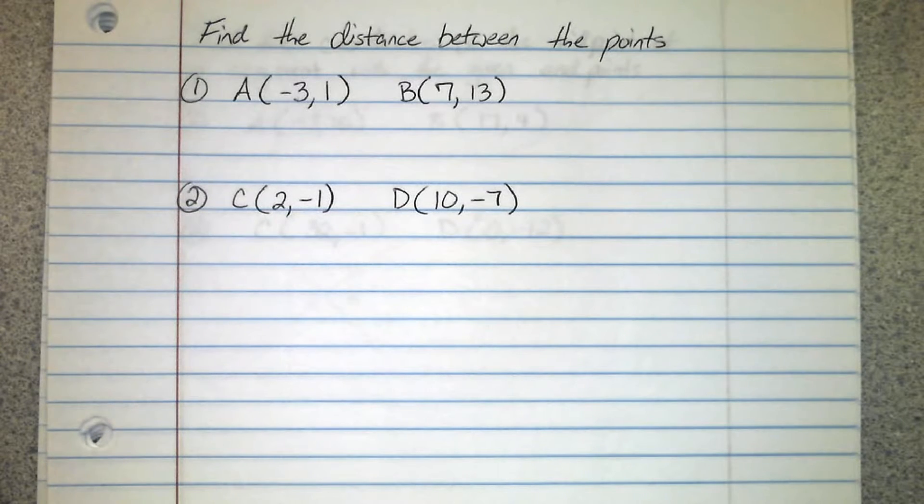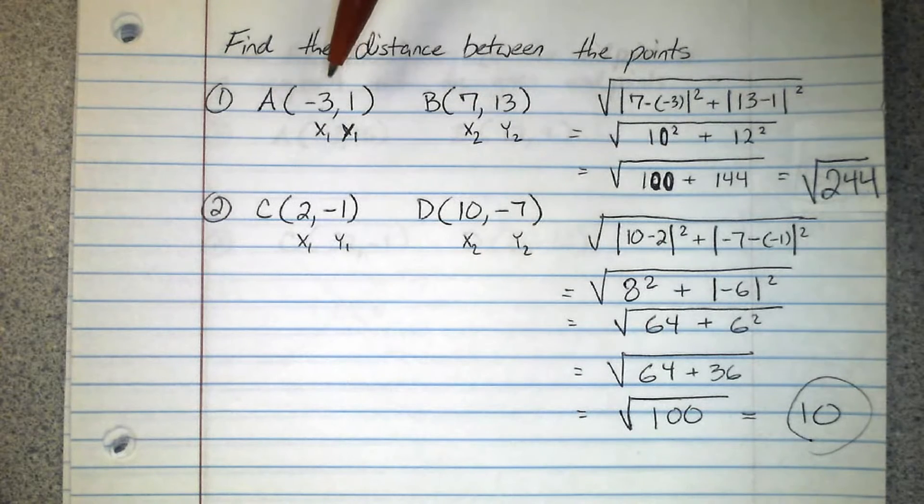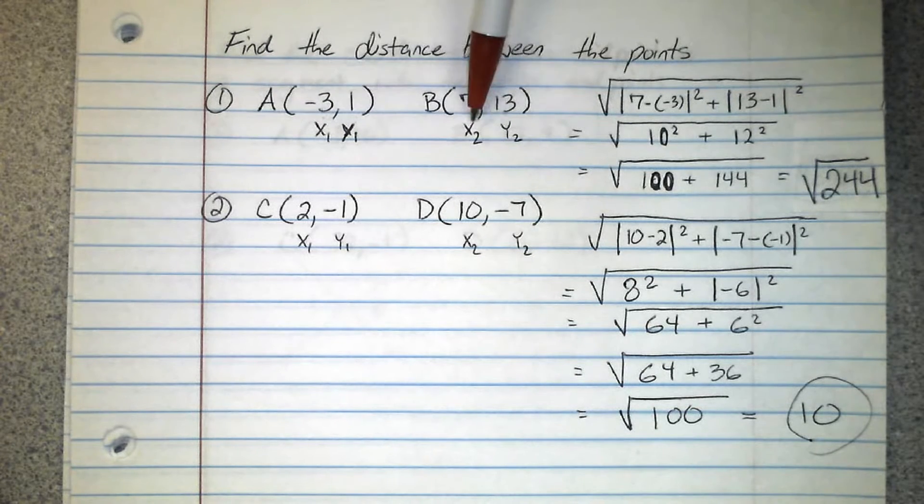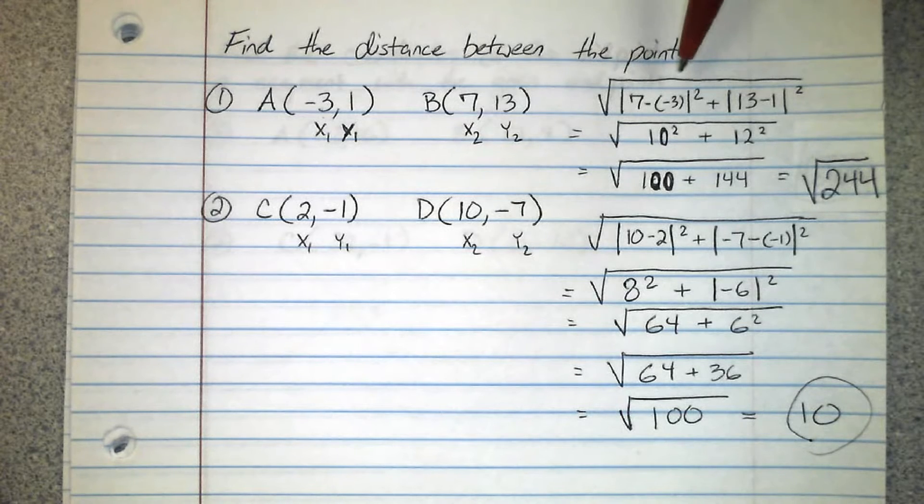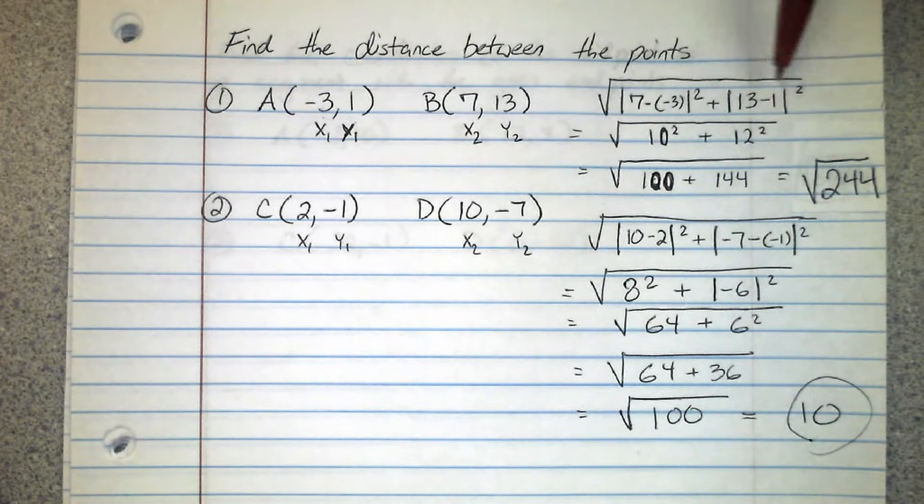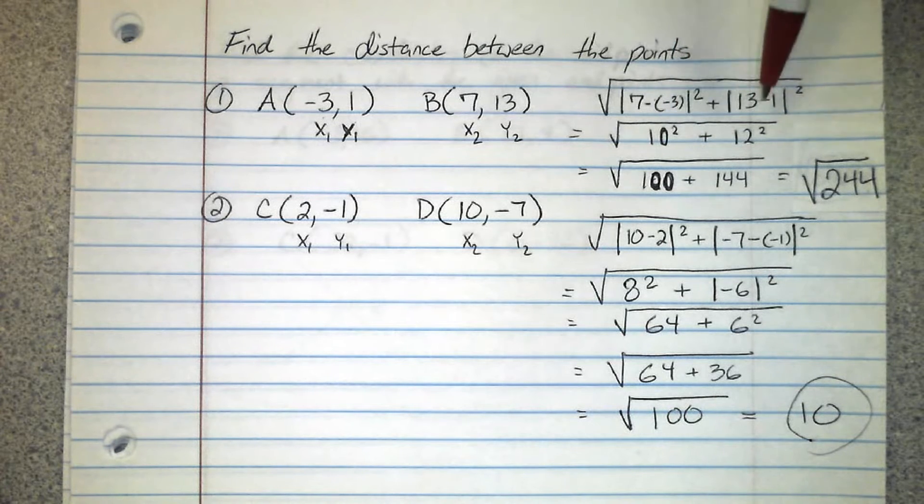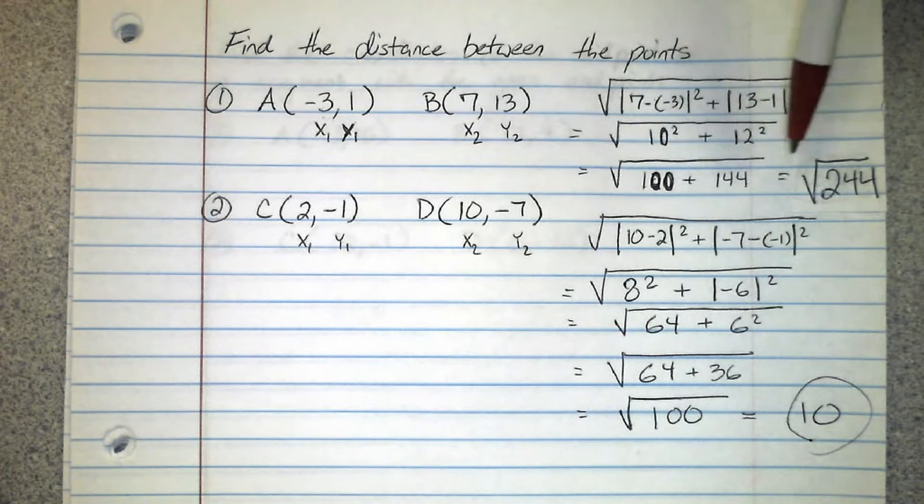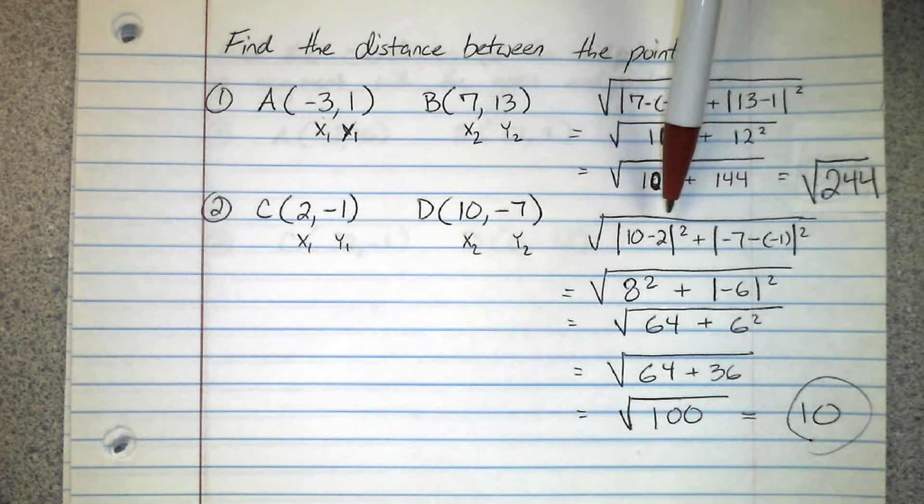Okay, try these two with distance formula. With this one don't forget to label x₁, y₁, x₂, y₂. Your formula is the square root of x₂ minus x₁ squared plus y₂ minus y₁ squared. We fill in the values: 7 minus the negative, remember it's the same thing as adding, so we end up with 10 squared plus 12 squared, that's 100 plus 144. We end up with square root 244.